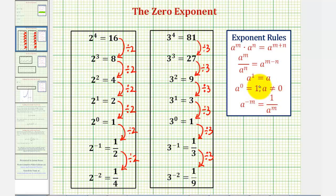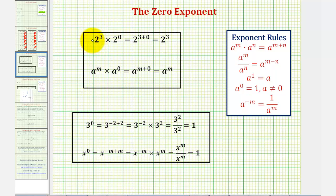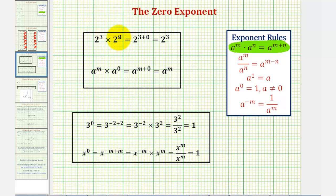Let's also justify this rule using our properties of exponents. If we consider two raised to the power of three times two to the zero, we know when multiplying with the same bases, the rule is to add the exponents. So if we add the exponents, we would have two raised to the power of three plus zero, which is just equal to two to the third. So if two to the third times two to the zero is equal to two to the third, the only way that's going to be true is if two to the zero is equal to one.